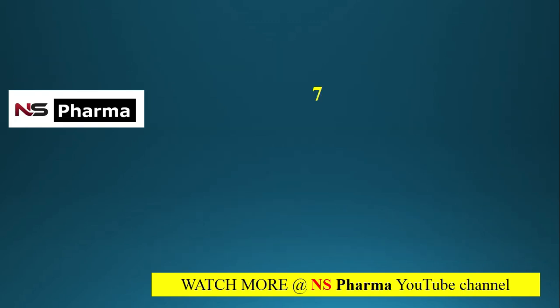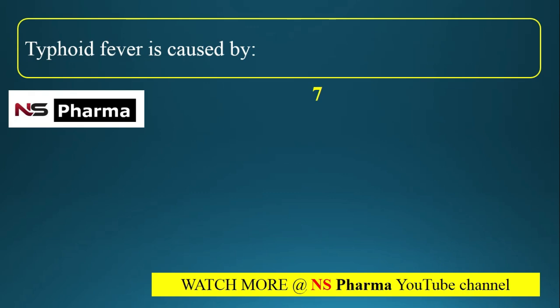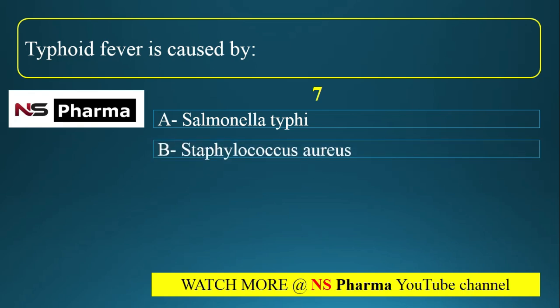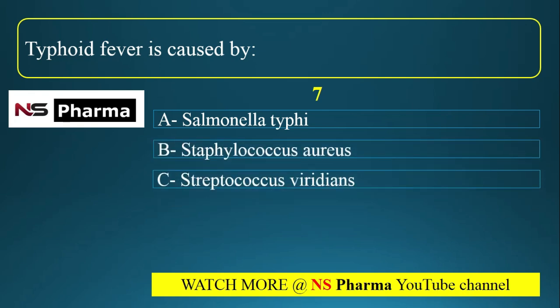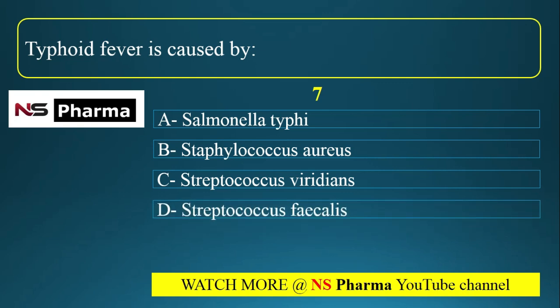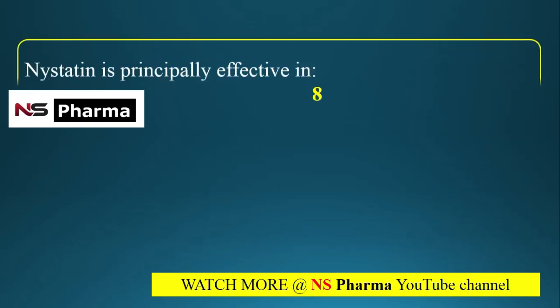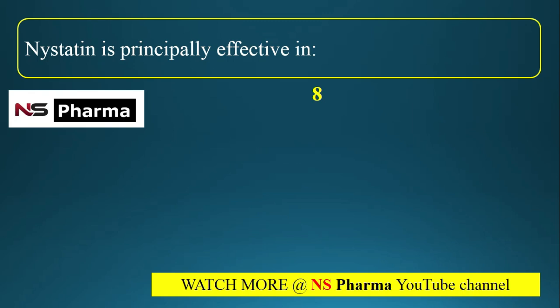Question 7: Typhoid fever is caused by — (a) Salmonella typhi, (b) Staphylococcus aureus, (c) Streptococcus viridans, (d) Streptococcus faecalis. The correct answer is option A: Salmonella typhi.